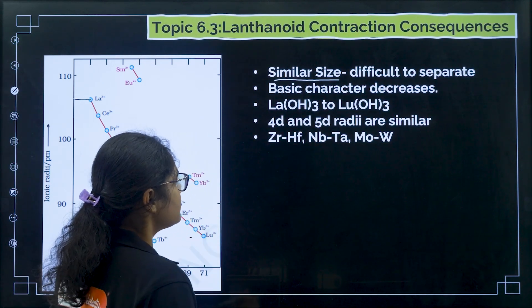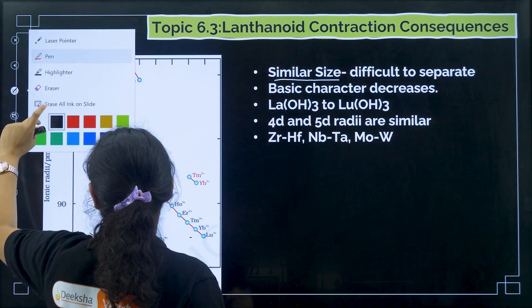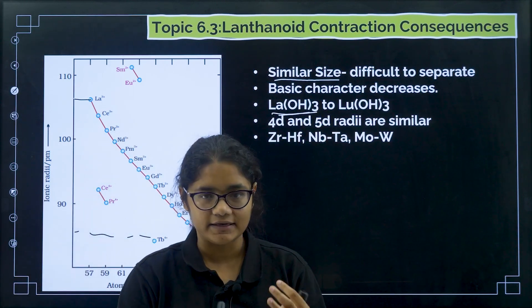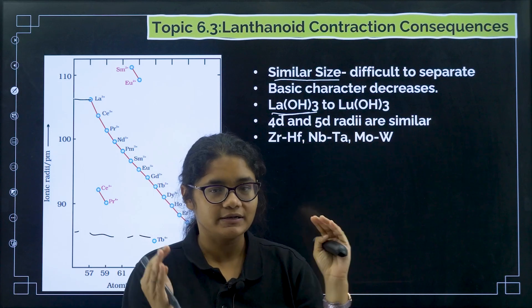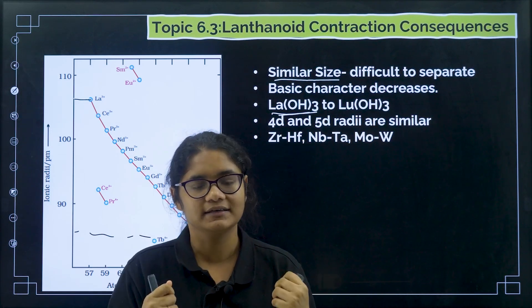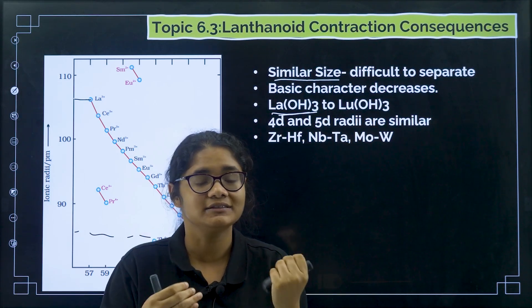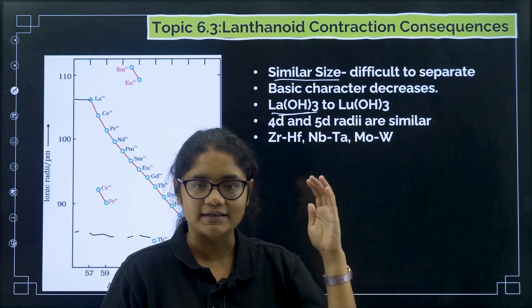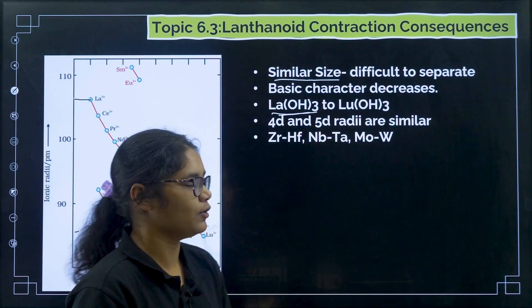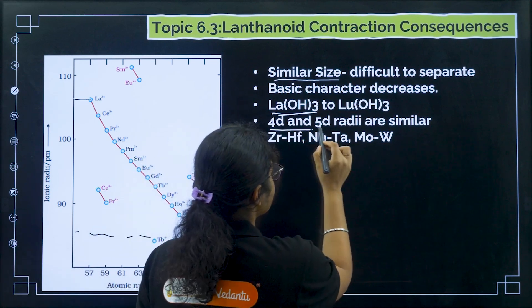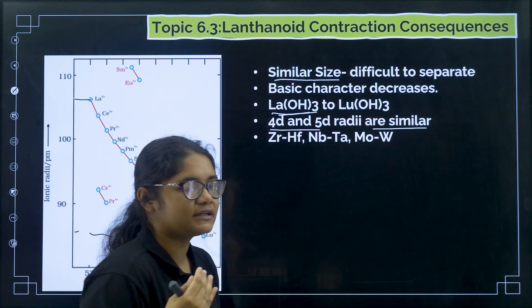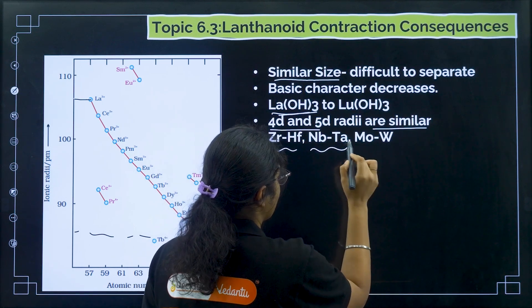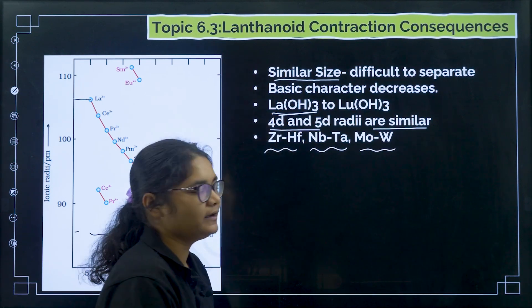As a result of lanthanide contraction, the basic character of lanthanide hydroxides decreases along the period. As the size decreases, the bond strength increases, making it more difficult to release OH⁻. Also, 4D and 5D elements have almost the same size because of lanthanide contraction — examples are zirconium and hafnium, niobium and tantalum, and molybdenum and tungsten.